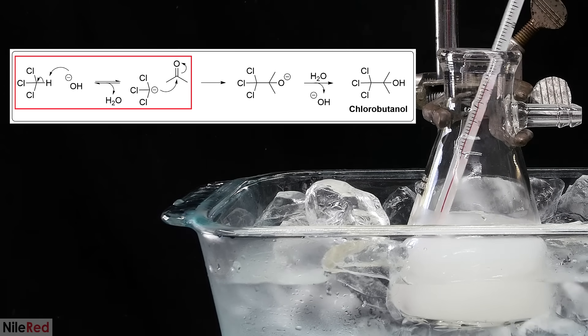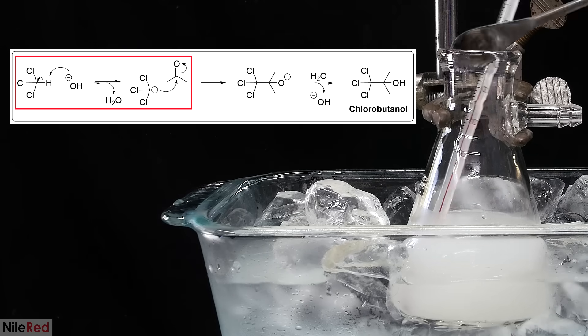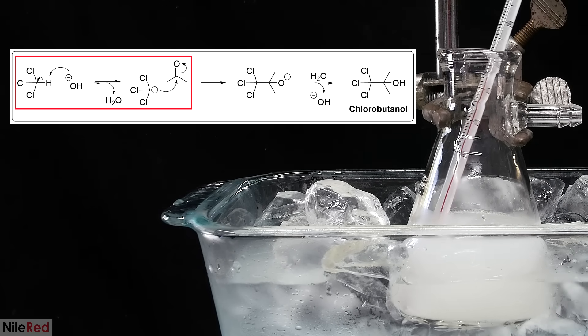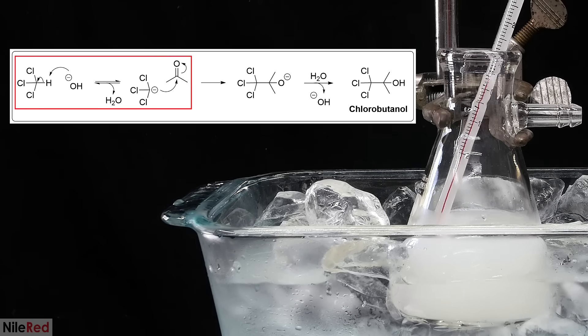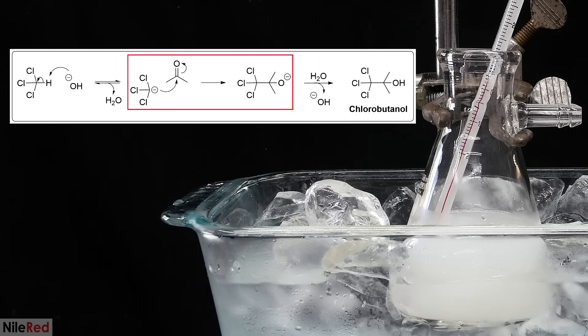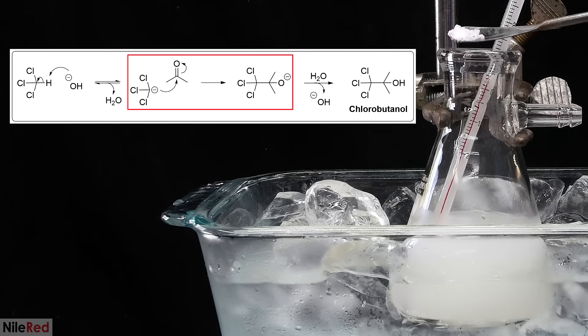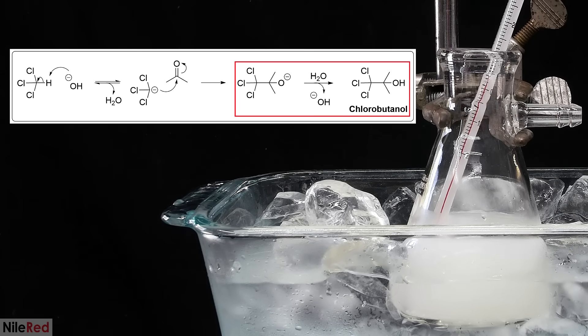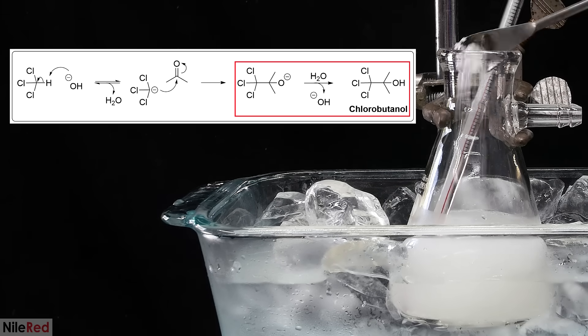In the first step, the hydroxide ion from the potassium hydroxide reacts with the slightly acidic hydrogen of chloroform. This leads to the production of a negatively charged intermediate and water as a side product. This intermediate then attacks a molecule of acetone, and the carbonyl opens up. The negative charge on the oxygen picks up a hydrogen from the water that formed earlier, which regenerates the base catalyst.